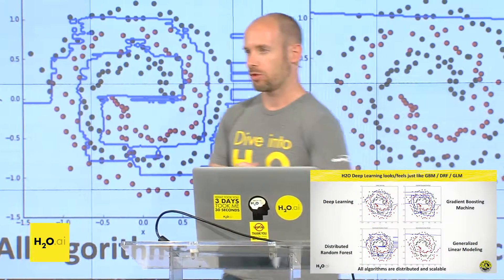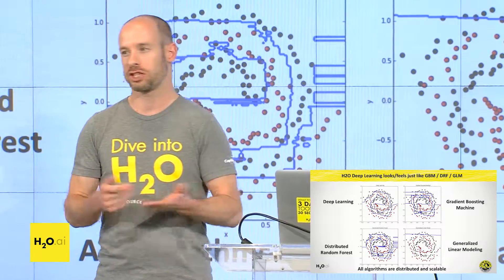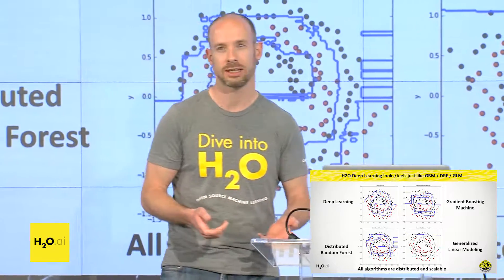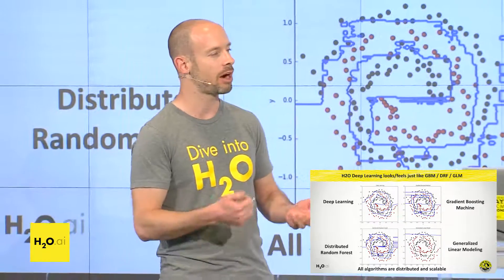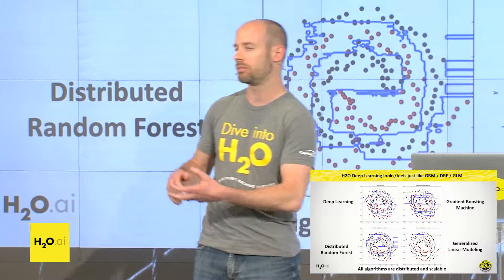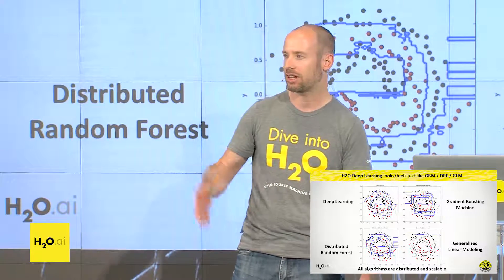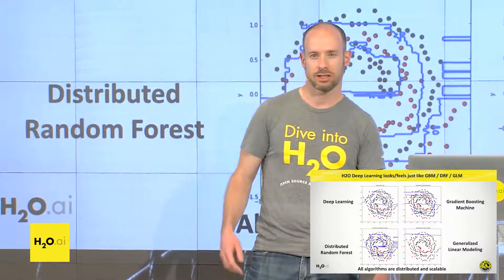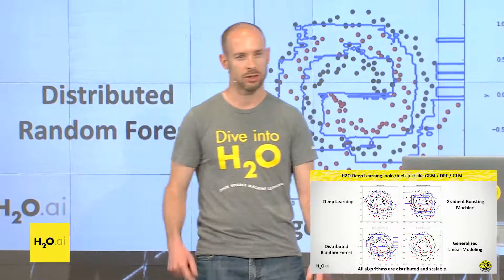For those of you who have used H2O, you'll notice that H2O deep learning feels just like H2O GBM, H2O Random Forest, or H2O GLM. They're all supervised models. Deep learning has some unsupervised parts too, but basically it's a model. It runs from R, Python, Flow, Scala, Java, whatever. It runs on a cluster, runs on distributed datasets that cannot fit on a single machine. It can have categorical values, missing values. You don't have to standardize anything, worry about learning rates or momentum. You just say go, and it runs.